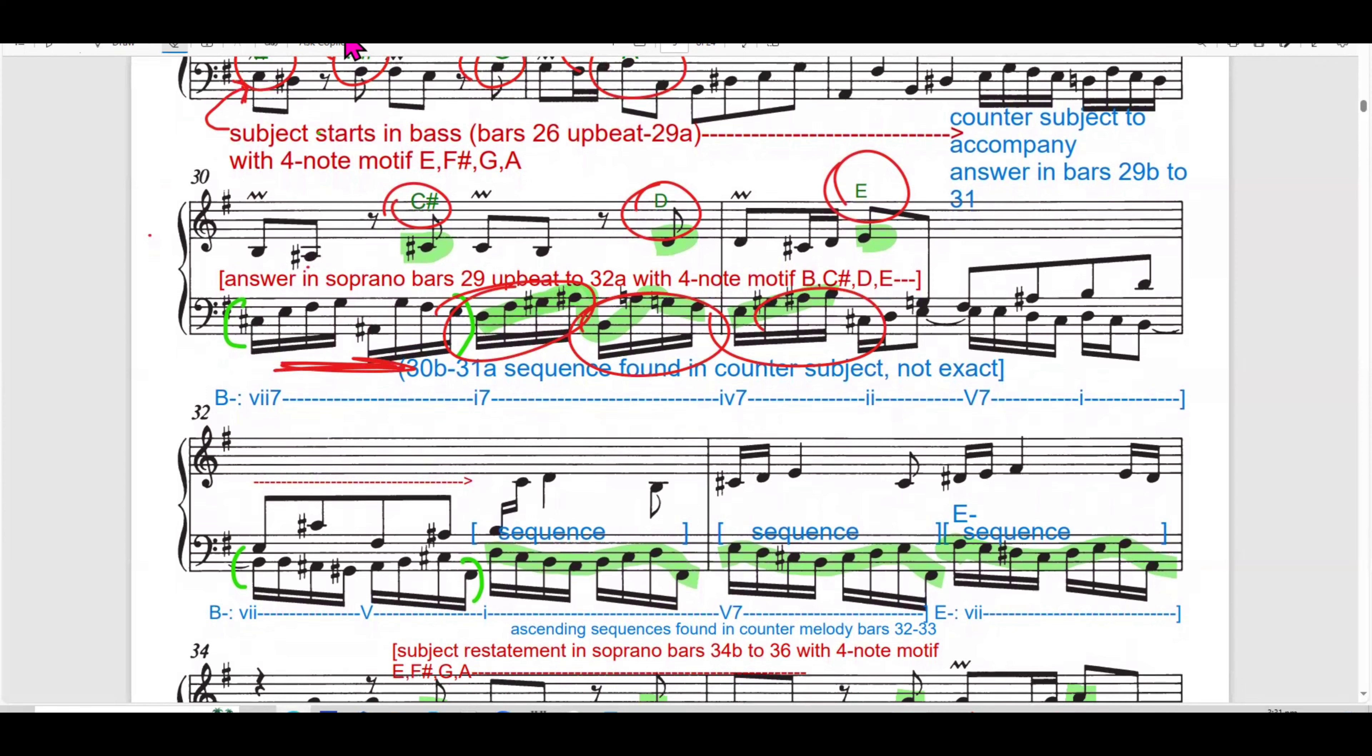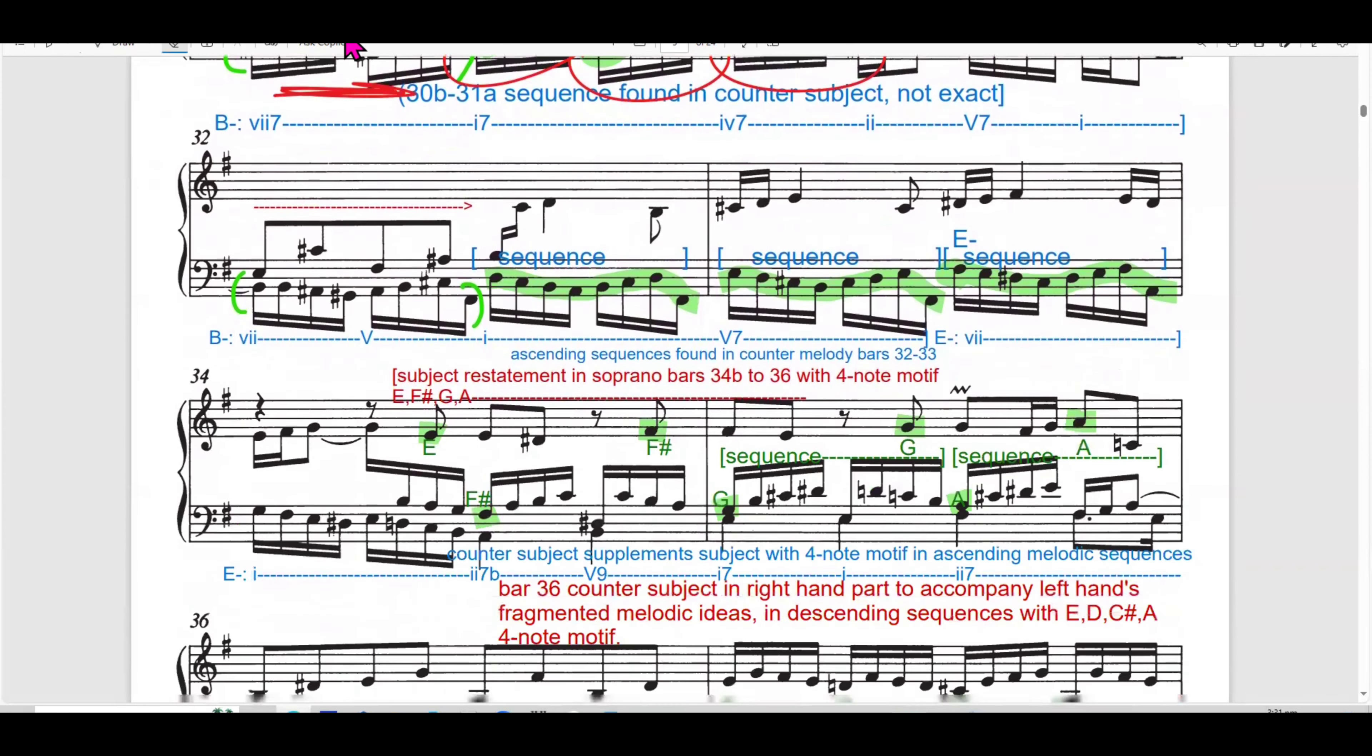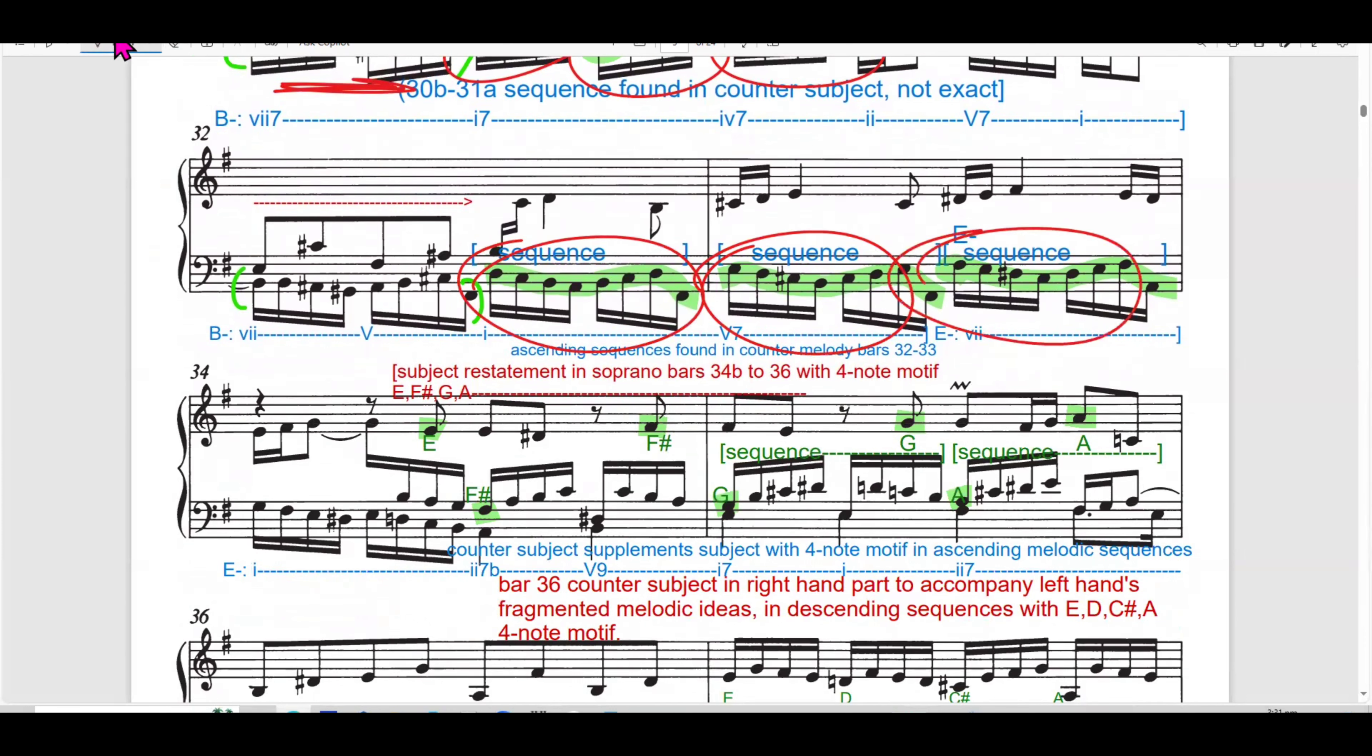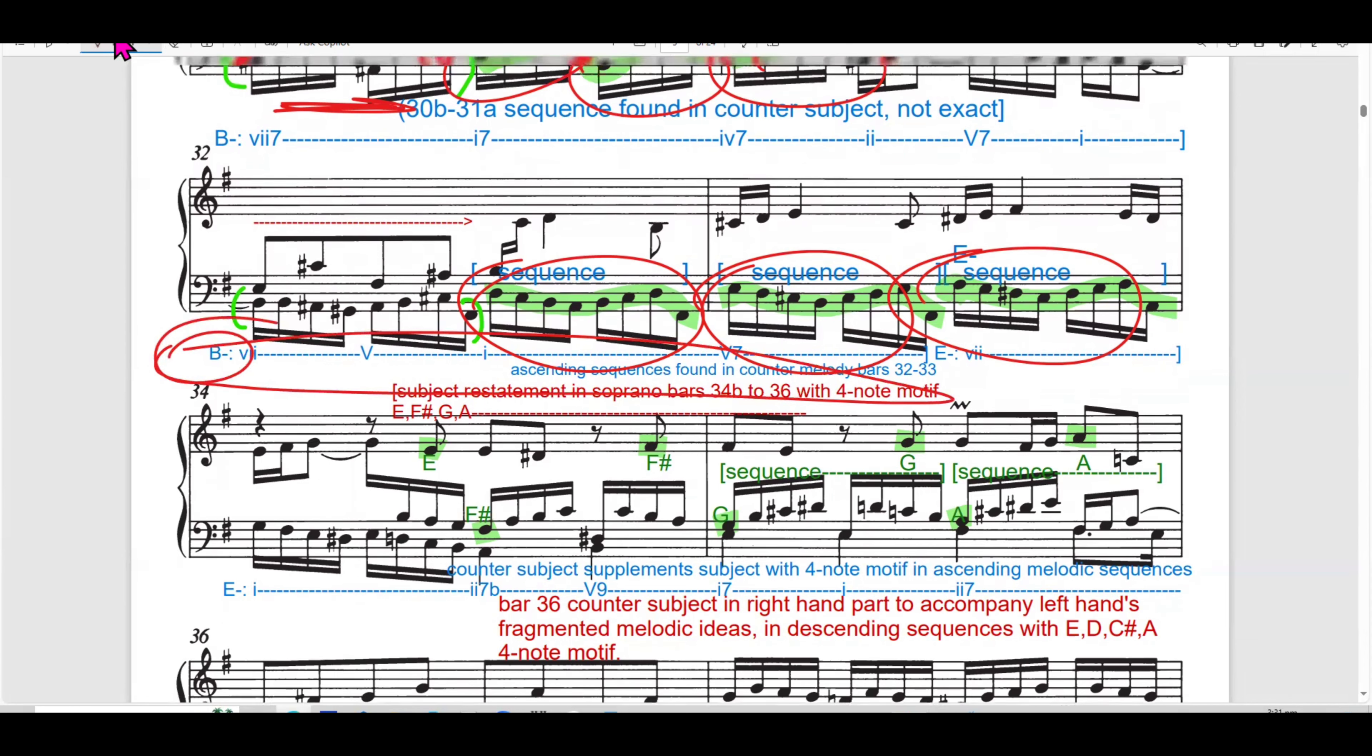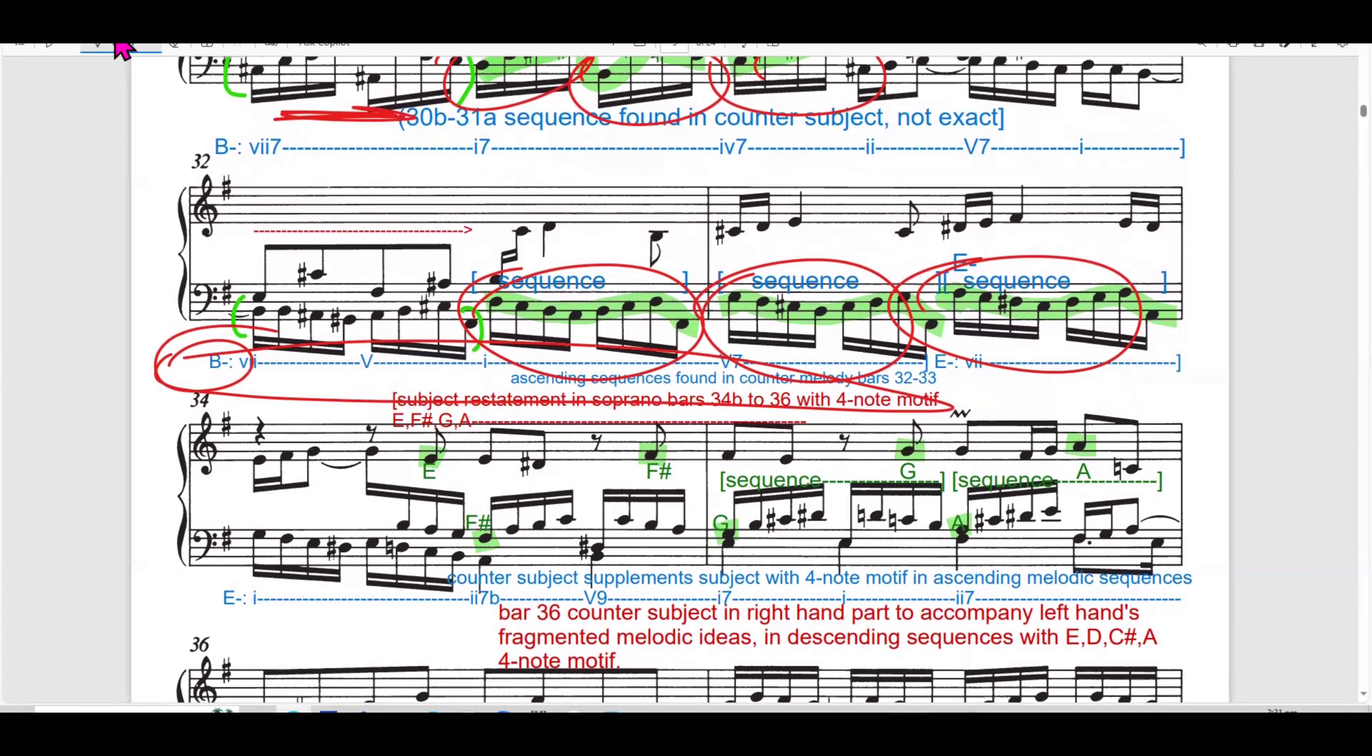The subject is presented alone, allowing the listener to clearly hear the motif before any polyphonic interaction occurs. By isolating the subject at the beginning, Bach ensures its clarity and prepares for the counterpoint treatment that will follow. The answer appears in the soprano voice from bar 29, which is here.